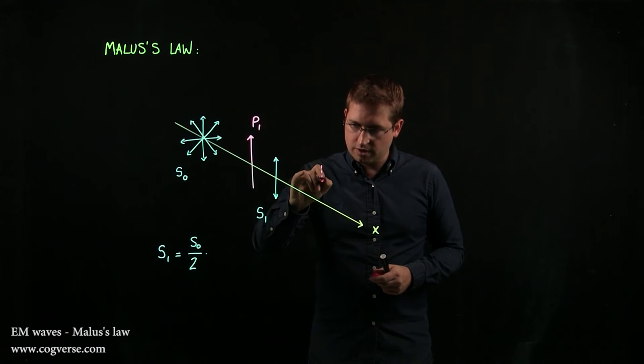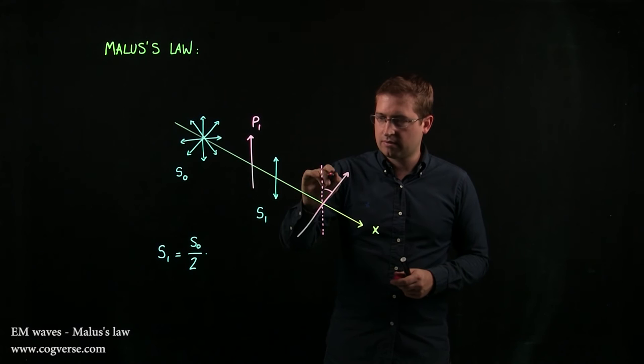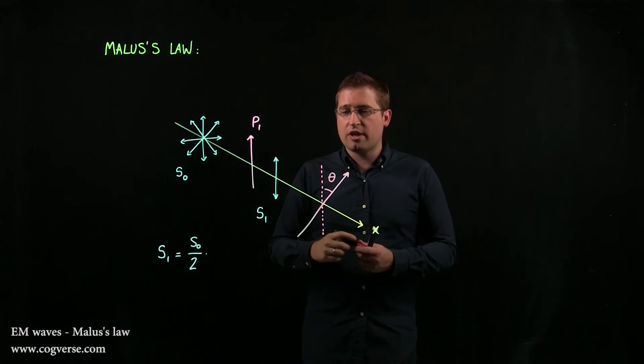Say you have P2, another polarizer, and you angle it at an angle α or θ. Let's call it θ with respect to the direction of the incoming polarized light.